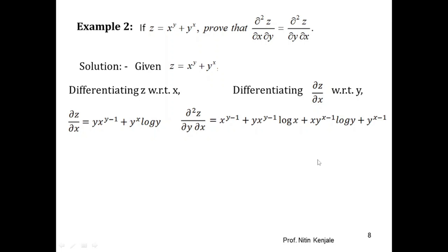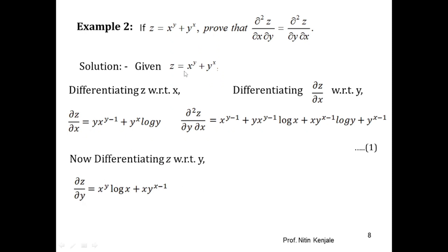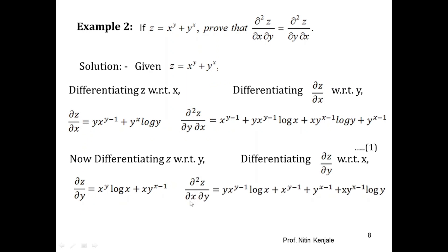Now let us differentiate z with respect to y. So ∂z/∂y: derivative of x^y is x^y·log x, plus derivative of y^x is x·y^(x−1). Now we differentiate ∂z/∂y with respect to x to get ∂²z/∂x∂y. Derivative of x^y·log x using the product rule: y·x^(y−1)·log x plus x^(y−1).